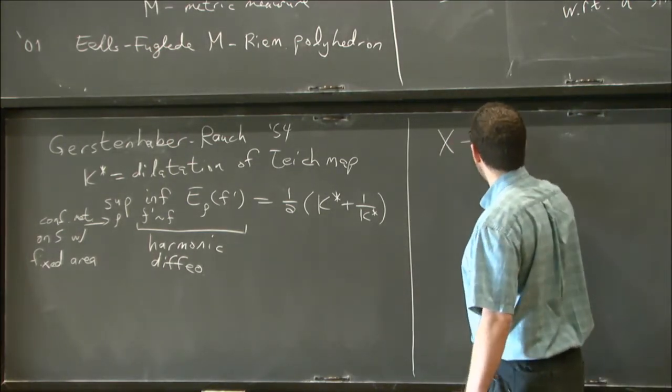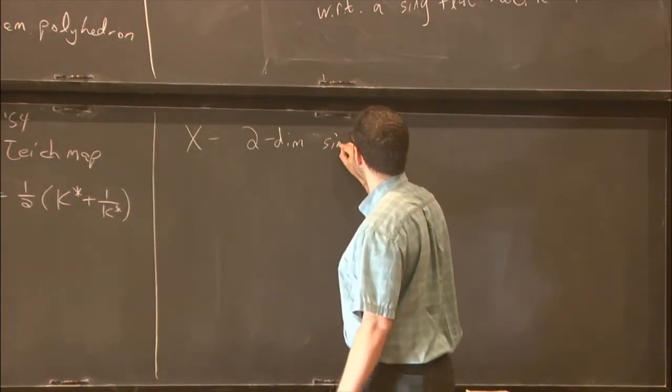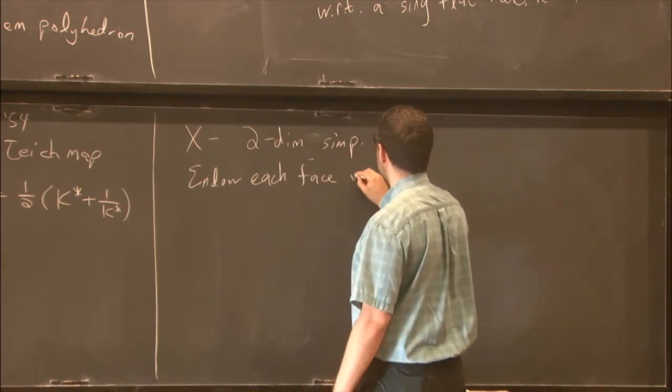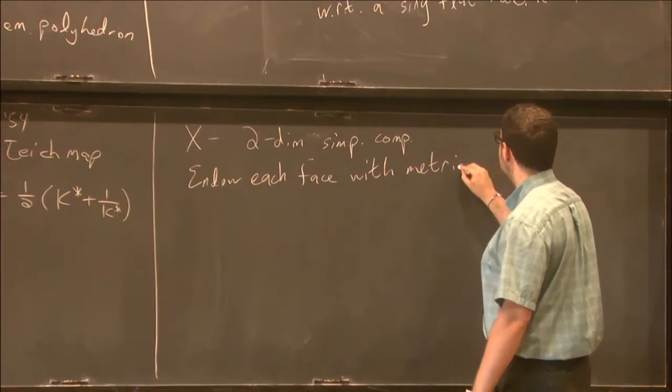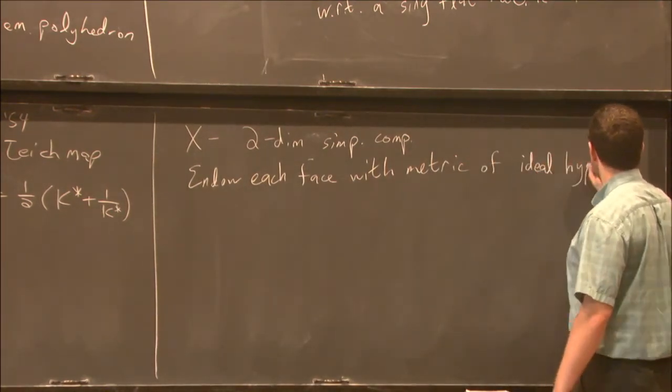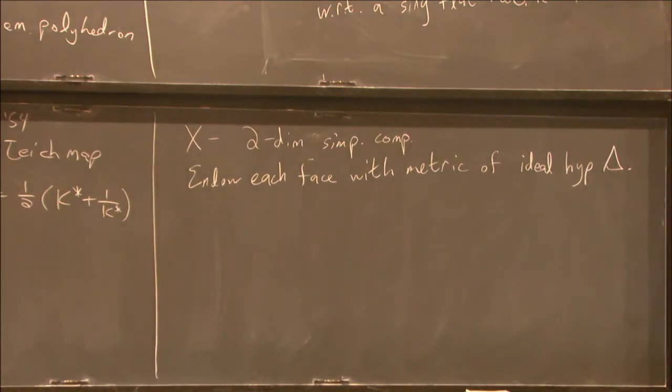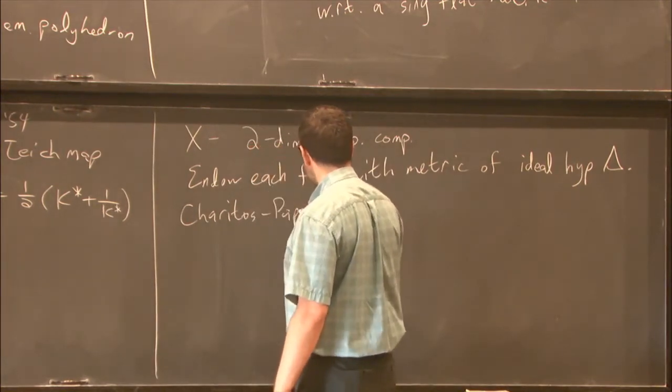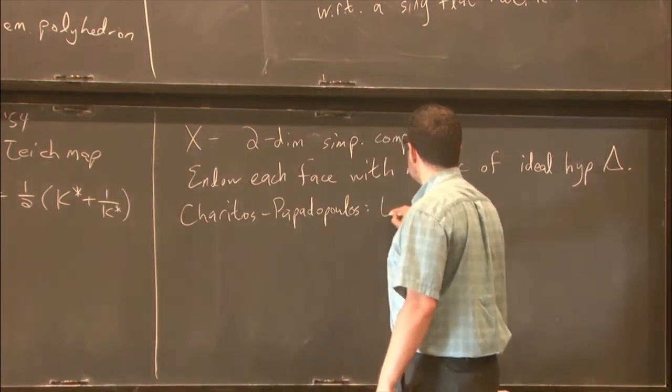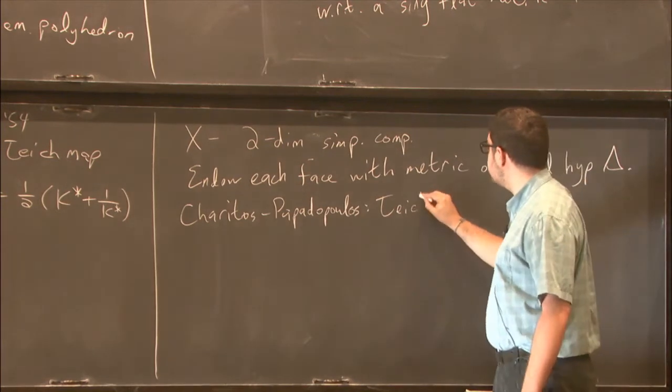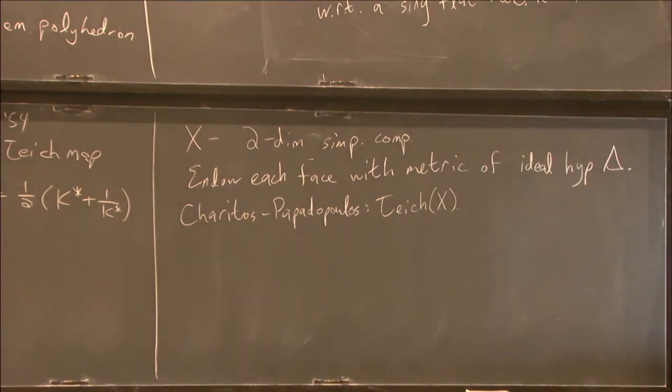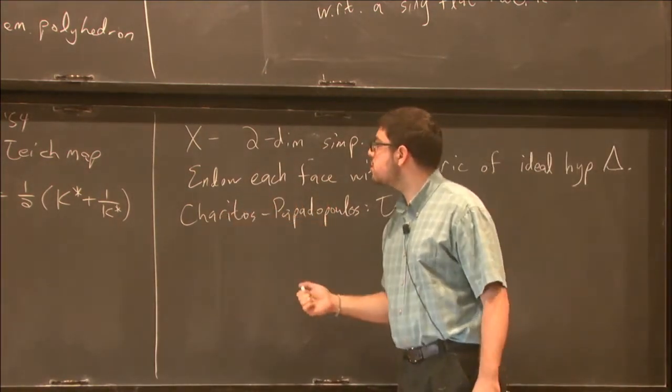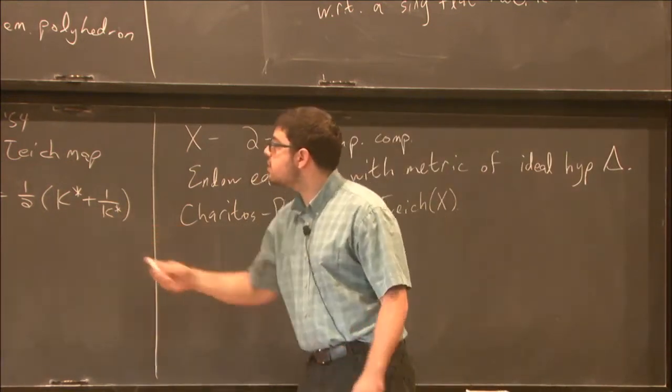So this is sort of the theory as of a couple decades ago. The spaces I'm considering are x is a two-dimensional simplicial complex. And we endow each face with the metric of an ideal hyperbolic triangle. This punctures x at the vertices. So the vertices are removed to infinity. Caritos and Papadopoulos described what it takes for such a metric to be complete and parameterize the Teichmuller space of complete ideal hyperbolic metrics. And in order to initiate the Gromov-Roche principle on these spaces, the first step is this inside infimum.